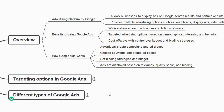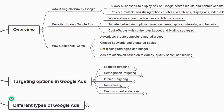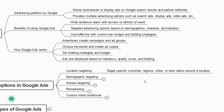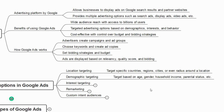The next thing is targeting options in Google Ads. We have location targeting, demographic targeting, interest targeting, remarketing, and custom intent audience. Location-based targeting lets us target specific countries, regions, cities, or even a radius around a particular location — for example, a specific pin code, or cities like Bangalore, Pune, Delhi, or Mumbai. Demographic targeting lets us target based on age, gender, and household income.